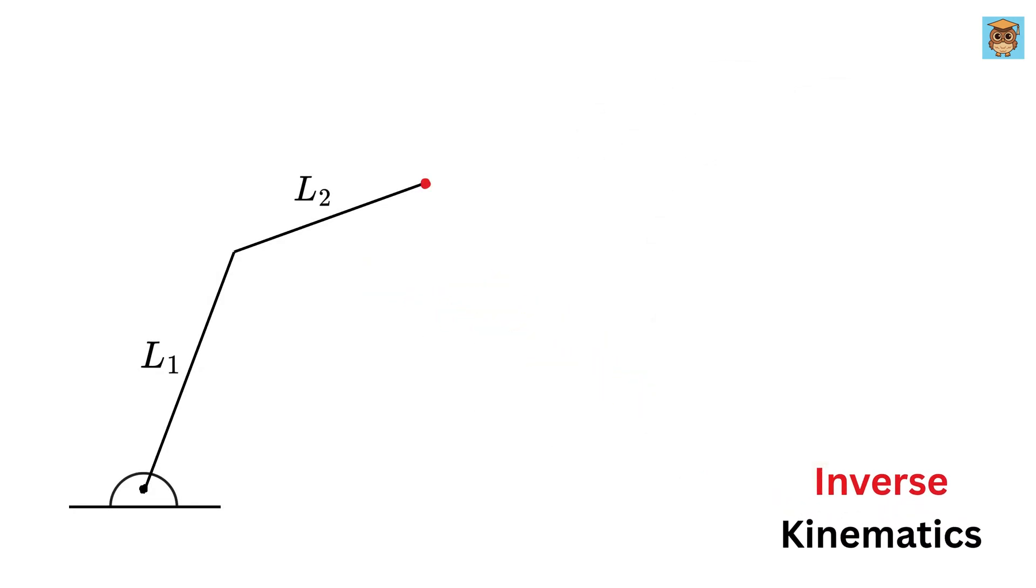This robot has two links whose robot parameters are theta one and theta two. Length of link one is L1 which is three units and that of link two is L2 which is two units. Suppose the position of our object is four and two. That means the object is four units to the right and two units up from the robot's base. Then assign the fixed and the moving frames to the robot like this.